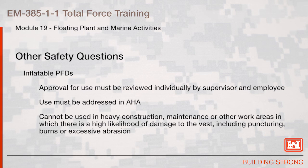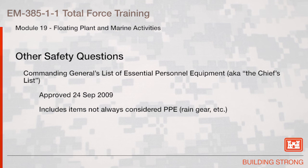Other safety topics include inflatable personal flotation devices. They shall be approved for use but must be reviewed individually by supervisor and employee, and their use must be addressed in an activity hazard analysis. They cannot be used in heavy construction, maintenance, or other work areas where there is a high likelihood of damage to the vest including puncturing, burns, or excessive abrasion. The commanding general's list of essential personnel equipment, also known as the chief's list, was approved on 24 September 2009 and includes items not always considered PPE, such as rain gear.